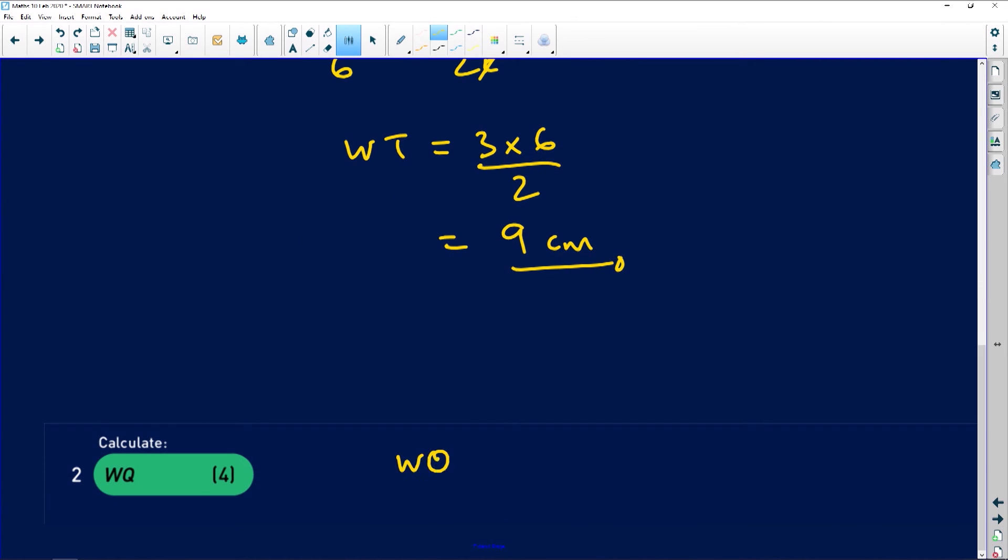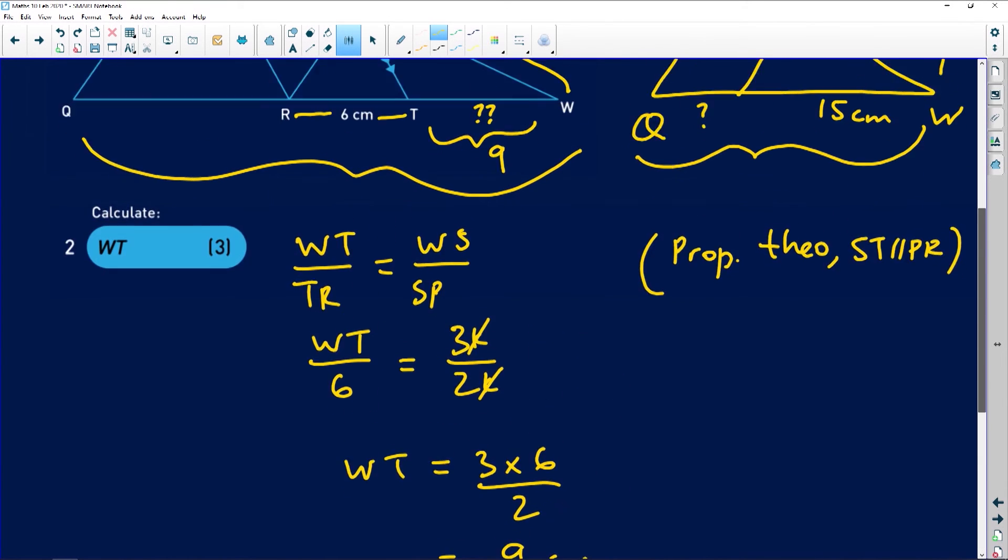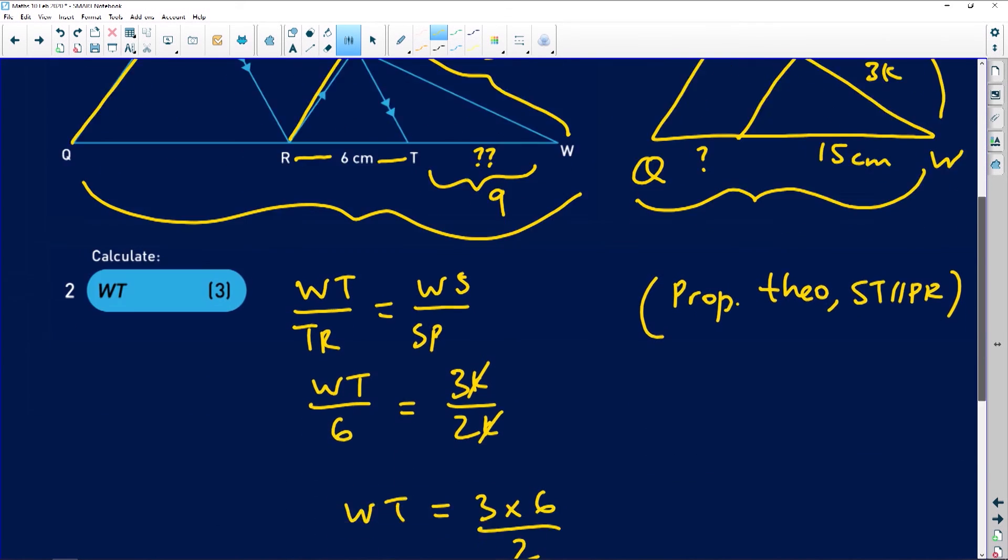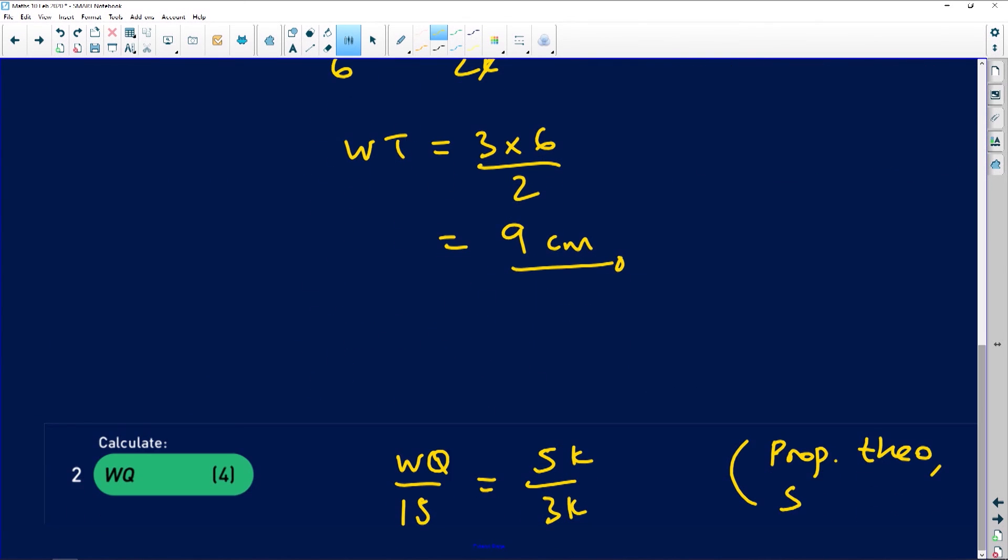WQ over 15 should be giving us 5k all over 3k. Again, it's because of the proportionality theorem. For some odd reason people forget this. Why is this the case? Let's check which pair is responsible for this particular ratio. This pair is the one that is responsible for us using that particular ratio. Now we are looking at SR and PQ. They're the lines that are parallel. Because SR is parallel to PQ, very very powerful.